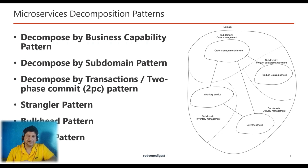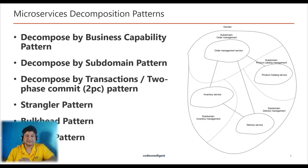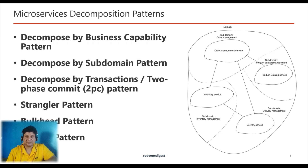There are six different types of design patterns in this category. First, decomposed by business capability — microservices is all about making services loosely coupled and applying the single responsibility principle. Second, decomposed by subdomain defines services corresponding to domain-driven design. Third, decomposed by transactions, also called two-phase commits — you can decompose services over transactions, and there will be multiple transactions in the system.